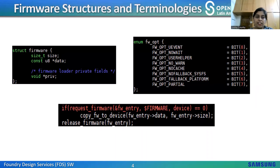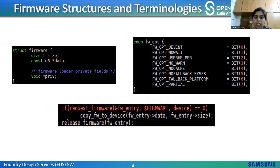These are the firmware structure and important terminology. The struct firmware has size, data, and a firmware loader. We also have an enum with all the important firmware operations. Firmware OPT_UEVENT enables the fallback mechanism to send a k-object uevent when the firmware is not found — user space is in charge of loading the firmware using the sysfs loading facility. Firmware OPT_NOWAIT describes the firmware request as asynchronous. Firmware OPT_USER_HELPER enables the fallback mechanism in case direct filesystem lookup fails. Firmware OPT_NO_WARN avoids printing warning messages. Firmware OPT_NO_CACHE disables firmware caching.